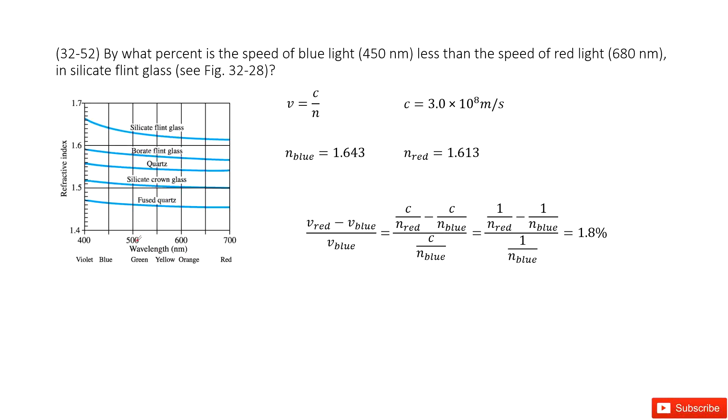As we can see from this picture, we know the wavelength and we know the refractive index. So it just shows us n and number. Now we need to know the difference from v.